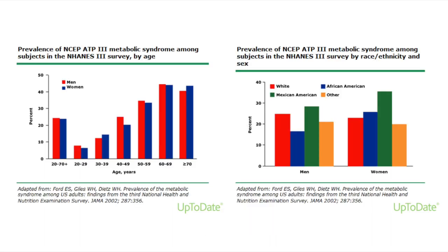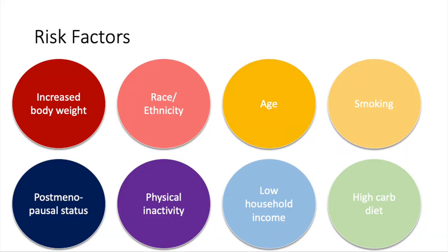The prevalence of metabolic syndrome rises as people get older, with its highest prevalence at ages 60 to 69. It is also more common in Mexican-Americans compared to other ethnicities. Risk factors include increased body weight, race, ethnicity, age, smoking, post-menopausal status, physical inactivity, low household income, and high carbohydrate diet.